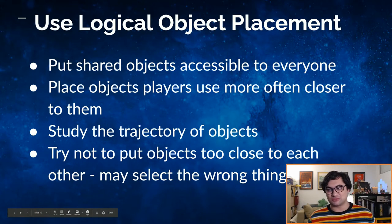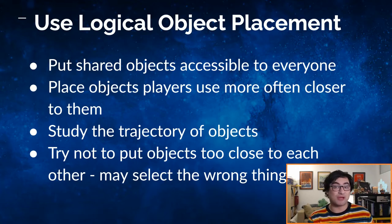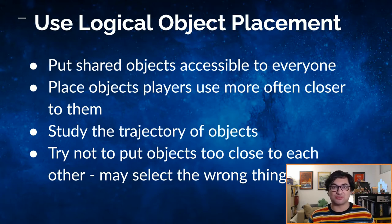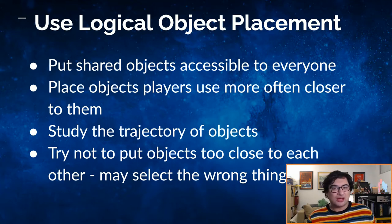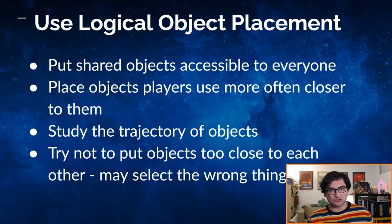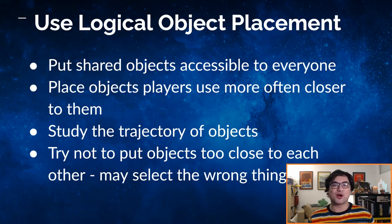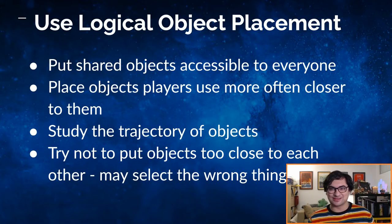Use logical object placement. Put shared objects so they're accessible to everyone — make sure a common resource pool can be reached by most people. Place objects players use more often closer to them, so if a player is particularly reliant on a specific resource, make sure they can reach it more easily. You also want to study the trajectory of objects — look at how players interact in the space. Do they need to reach out? Do they need to move across the table? Assess what the user experience is going to be like and accommodate for it in the most streamlined way possible. Try not to put objects too close to each other, or players will end up selecting the wrong thing.